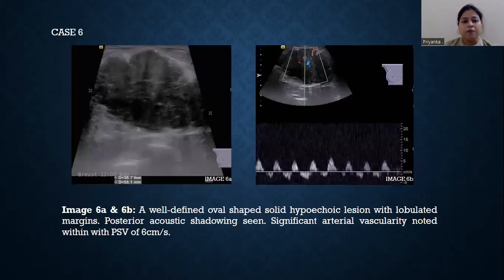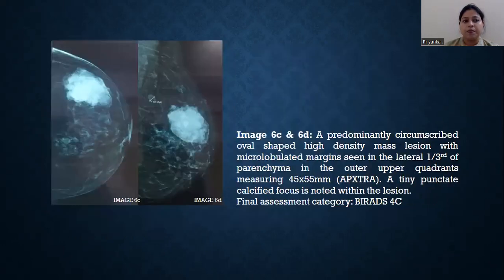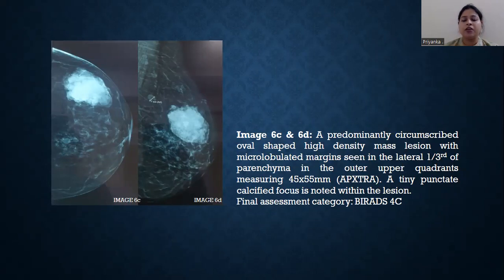Case number 6: a well-defined, oval-shaped, solid, hypoechoic lesion with lobulated margin; posterior acoustic enhancement and significant arterial vascularity noted. On mammogram, it was seen as a predominantly circumscribed, oval-shaped, high-density mass lesion with micro-lobulated margins. A punctate calcific focus was noted within the lesion. It was given BI-RADS 4C.